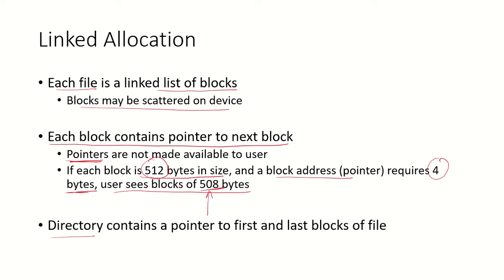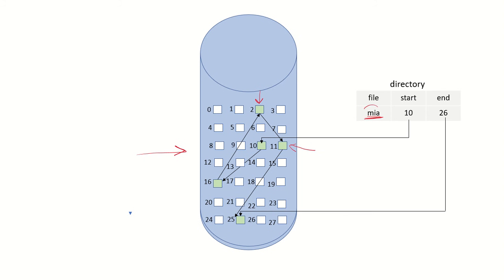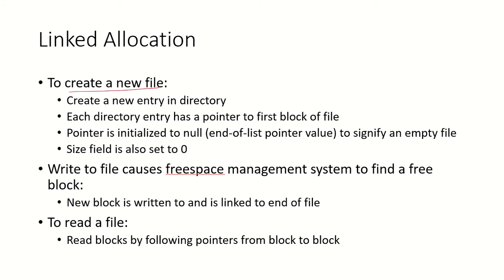In the directory, the information stored about the file includes a pointer to the first and last blocks of the file. For file 'mia,' the directory stores that the start block address is 10, which is the first block. Block 10 contains a pointer to block 16; block 16 contains a pointer to block 2; block 2 contains a pointer to block 11; and block 11 contains a pointer to block 25, which is the last block. The directory also stores the address of this last block, which is 25.